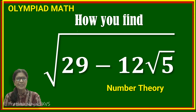Hello friends, welcome to my channel and thank you for subscribing. Today I have taken a very simple but basic question: how to find the square root when it is in this form — that means square root of 29 minus 12 times square root of 5. We have to find the square root of 29 minus 12 root 5.